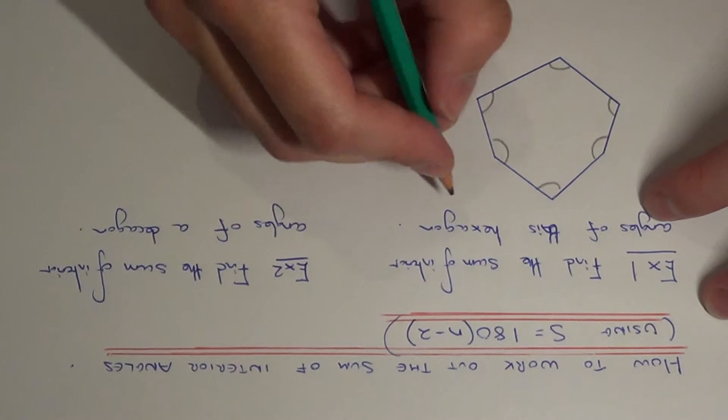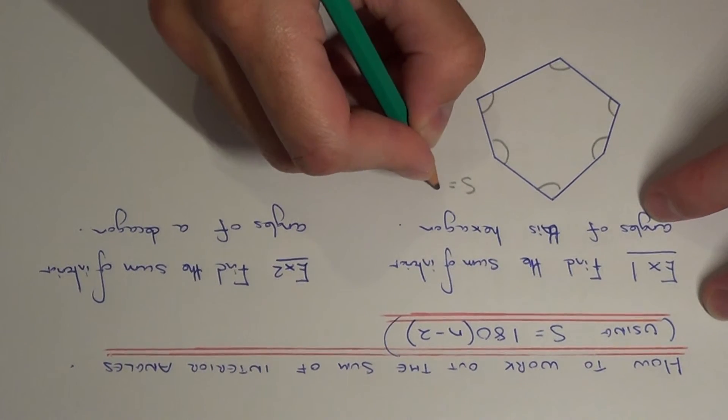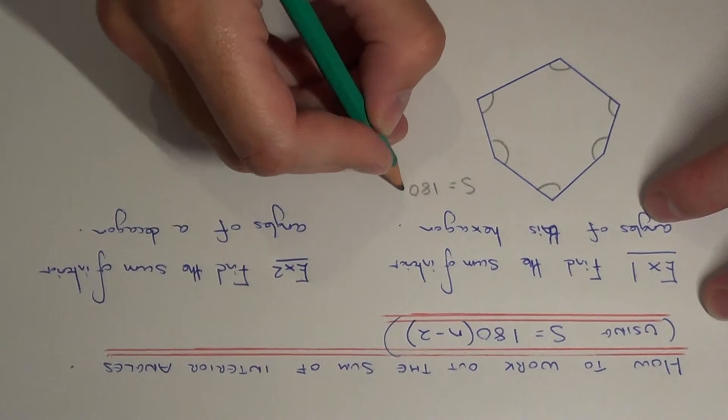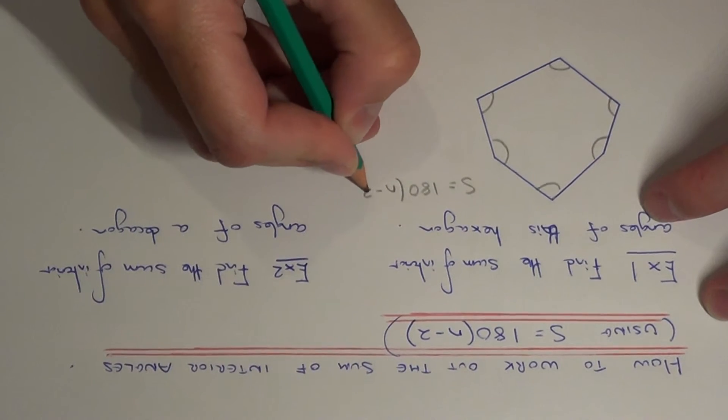So let's use the formula stated above, so it's S equals 180 bracket N minus 2.